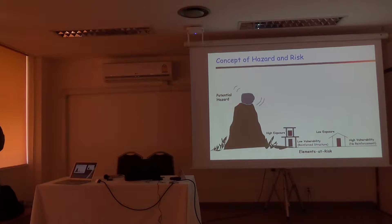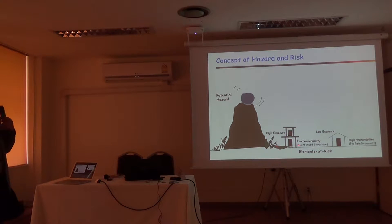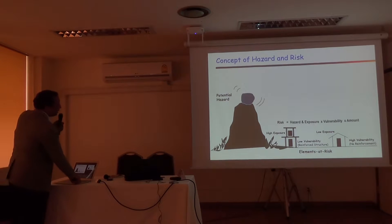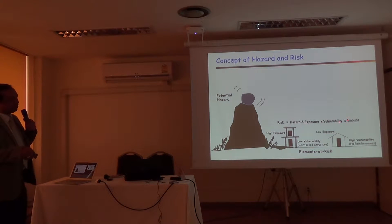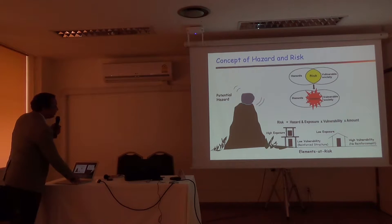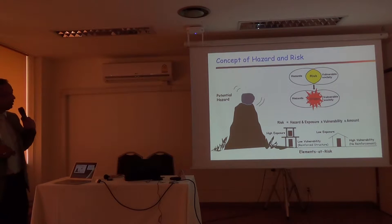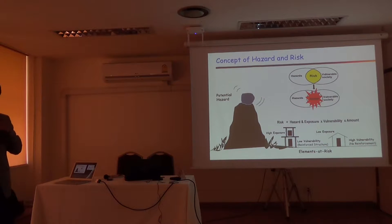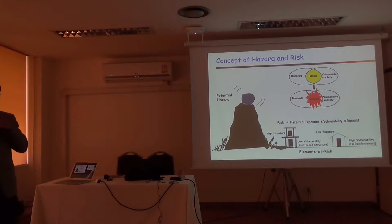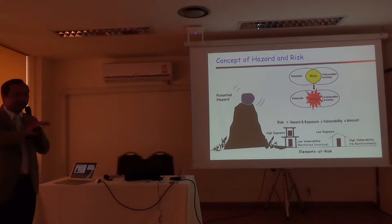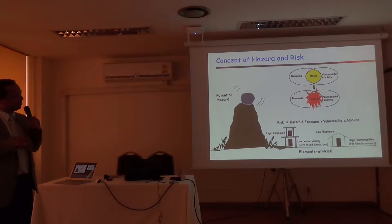The hazard is on the nature side — we have no control over when it will occur; we can only calculate some probability. Vulnerability is on our side. If you build a very good, high-quality house, your vulnerability is less for earthquake, landslide, or whatever. Then we calculate risk in terms of hazard, exposure, vulnerability, and the economic cost of the building. This is the difference between risk and disaster: when we calculate risk, we predict how much loss a flood or earthquake of a given magnitude will cause; when we say disaster, it has already happened.